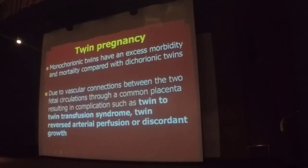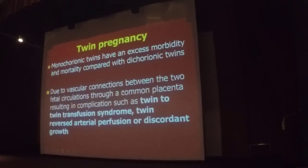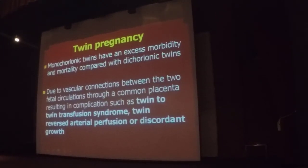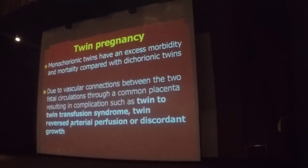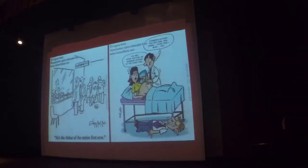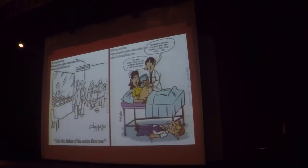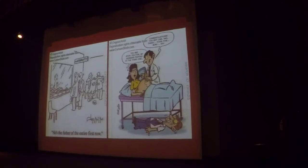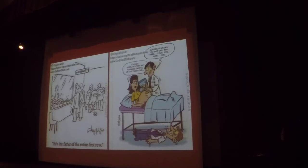Monochorionic twins have higher excess morbidity and mortality compared to dichorionic twins. This is because of the fetal circulation — they can end up having twin-to-twin transfusion syndrome, twin reversal arterial perfusion, or discordant growth. The common condition we see is TTTS — twin-to-twin transfusion syndrome — which should be recognized early enough for us to manage.